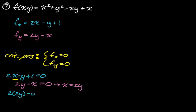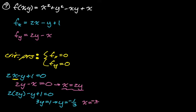Substituting 2y for x in the first equation: 2(2y) - y + 1 = 0, so 3y = -1, therefore y = -1/3. Since x = 2y, x = -2/3. So our critical point is (-2/3, -1/3).